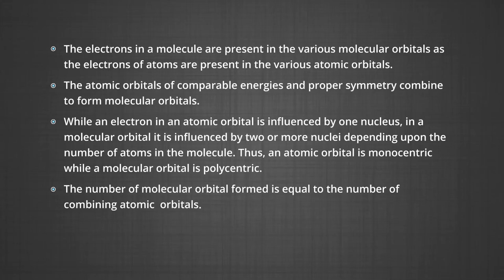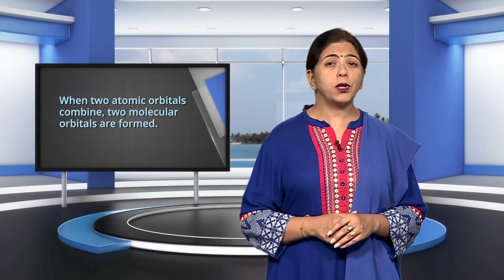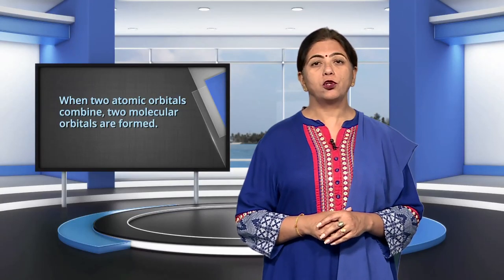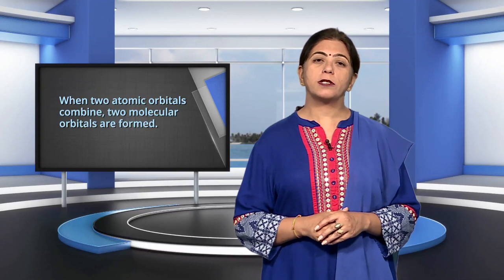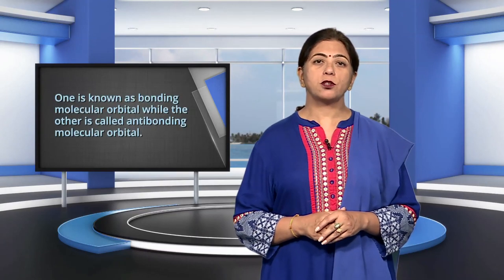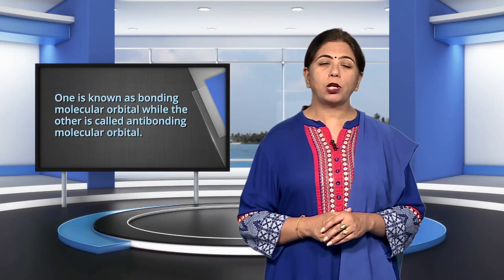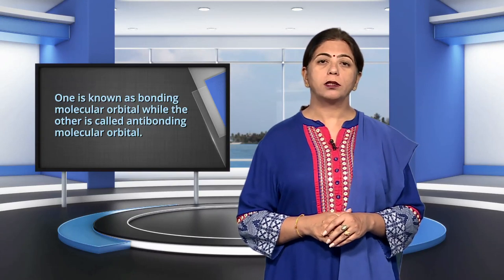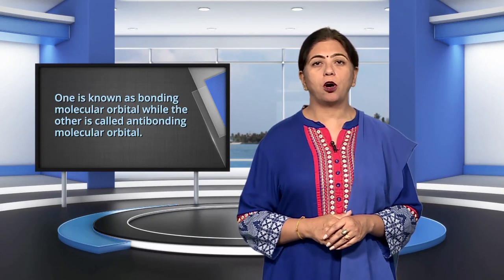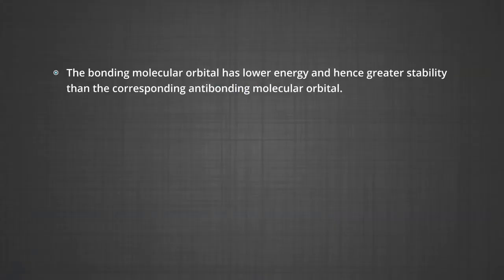The number of molecular orbitals formed is equal to the number of combining atomic orbitals. When two atomic orbitals combine, two molecular orbitals are formed. One is known as the bonding molecular orbital, while the other is called the anti-bonding molecular orbital. The bonding molecular orbital has lower energy and hence greater stability than the corresponding anti-bonding molecular orbital.